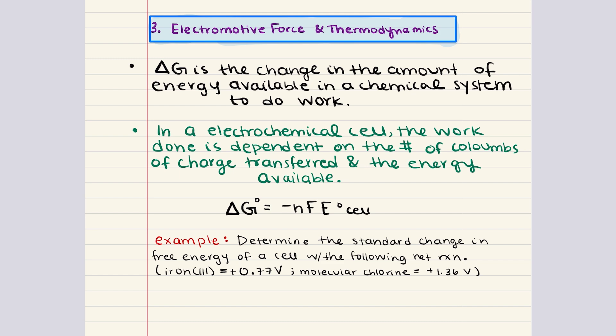We're going to start with Gibbs free energy. The electromotive force — the EMF of an electrochemical cell — is a measure of the voltage generated by the cell. This voltage arises from the difference in the reduction potentials of the two half cells. Thermodynamically, the EMF is related to the Gibbs free energy change of the electrochemical reaction.